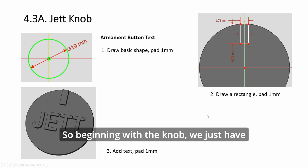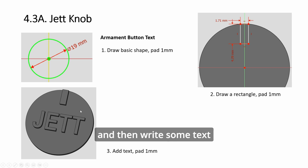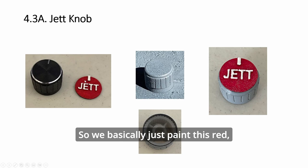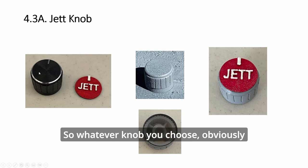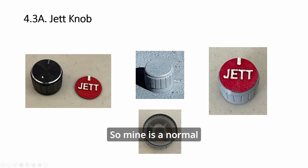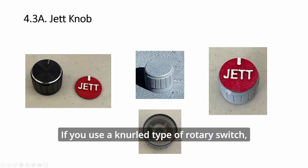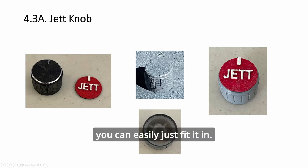Beginning with the knob, we just have a circle and pad it, then write some text and also align it like an arrow indicator. We basically just paint this red, paint the text and the line white, and stick it on top of a knob. Mine is a normal radio knob. If you use a different type of rotary switch you can easily just fit it in.